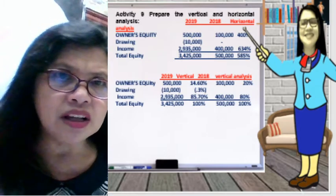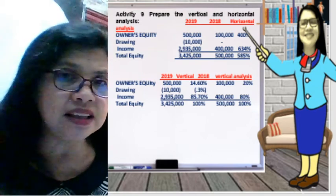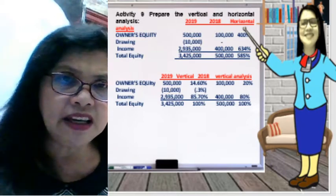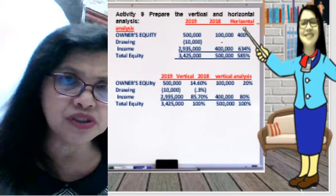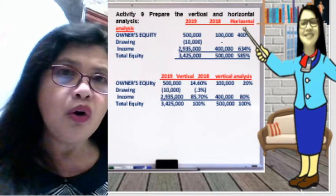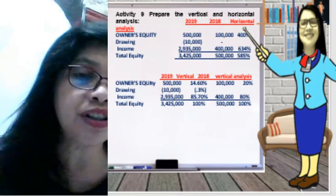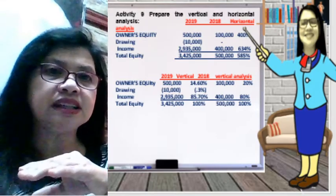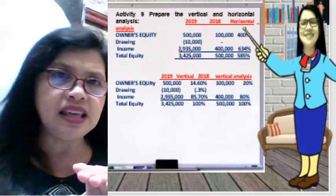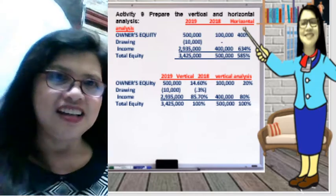In the drawing account, there is no drawing account in 2018, so for horizontal analysis we cannot compare it. For the income account: 2,935,000 minus the previous year of 400,000 over 400,000 gives 634% — an increase in income from 2018 to 2019.